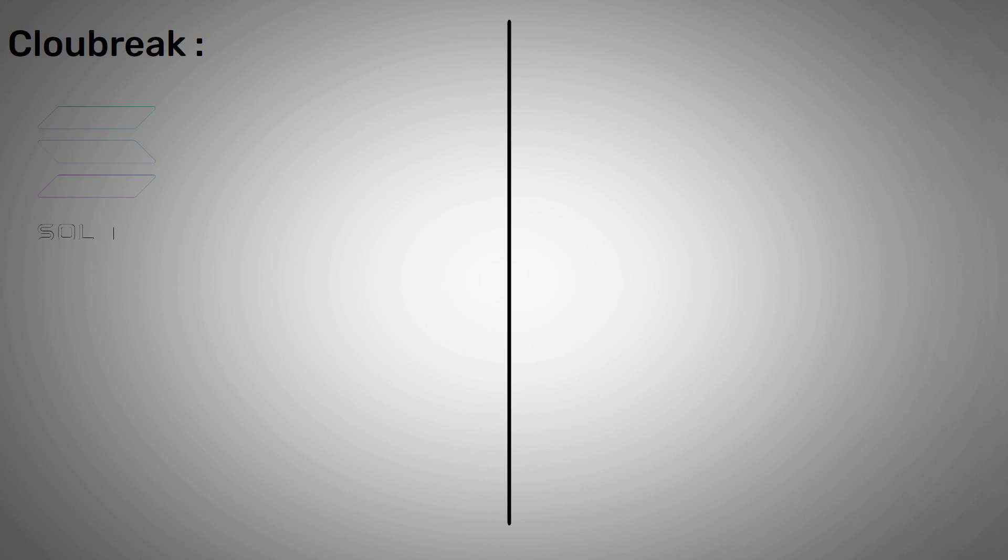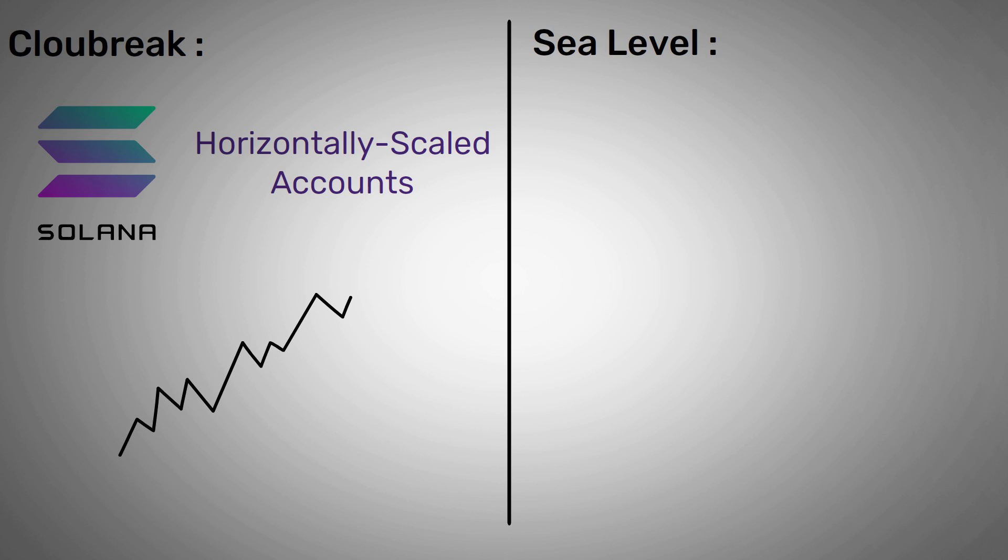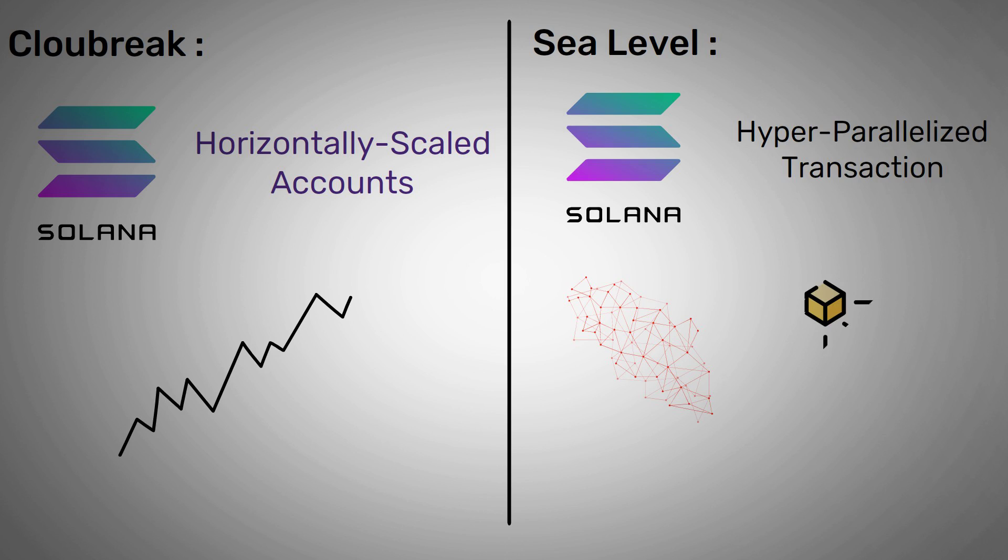Six: Cloudbreak. Solana uses this feature to create a horizontally scaled accounts database that enables an increase in scalability. Seven: Sea Level. To scale SSDs and GPUs, Solana uses a hyper-parallelized transaction processing engine. Because of this, the project remains the only chain that uses parallel blockchain transactions in one shard. Other blockchains have just a single thread.